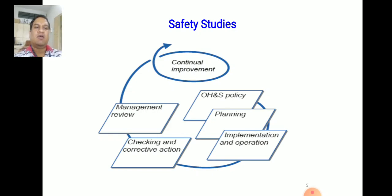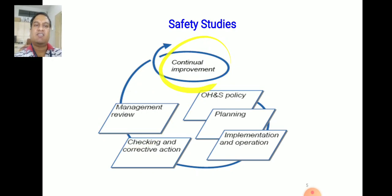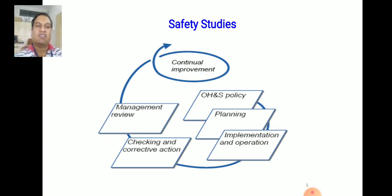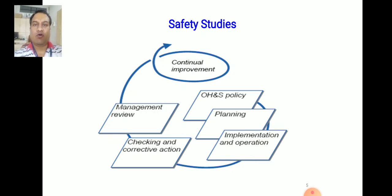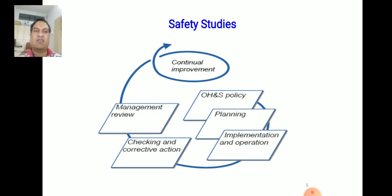These are general safety studies already incorporated in different ISOs. The OHS management cycle includes: OHS Policy, then Planning, then Implementation and Operation, then Checking and Correction, then Management Review, and then Continual Improvement. Continual Improvement is very important because we decide policies, do planning, implement different factors discussed in planning meetings, check and supervise all these things, and also carry out Corrective Action and Preventive Actions.